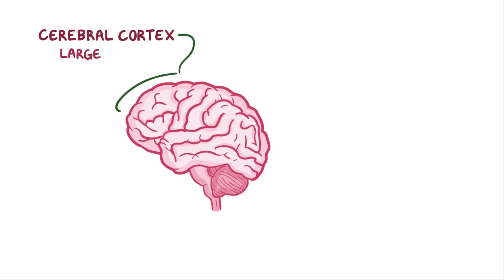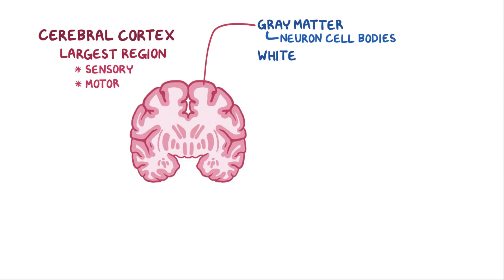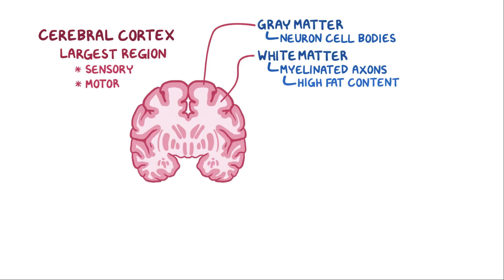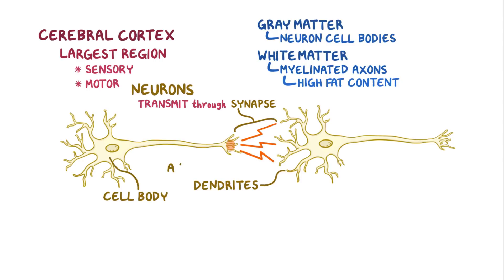The cerebral cortex is the largest region of the brain, and it's responsible for sensory and motor functions. The cerebral cortex has an outer gray area and an inner white area. The gray area, referred to as gray matter, houses neuron cell bodies, and the white area, referred to as white matter, houses myelinated axons. It's lighter because of the high fat content in myelin. Neurons are the key cells that transmit neural impulses to one another through synapses. Each neuron has dendrites, a cell body, and an axon.